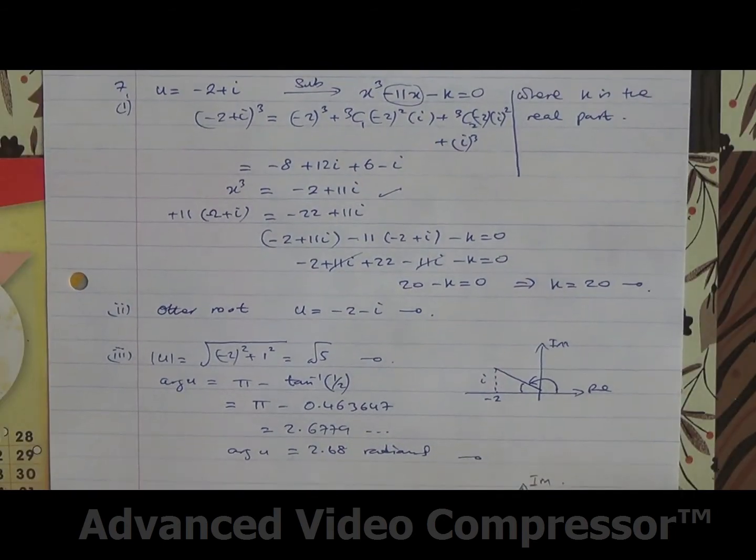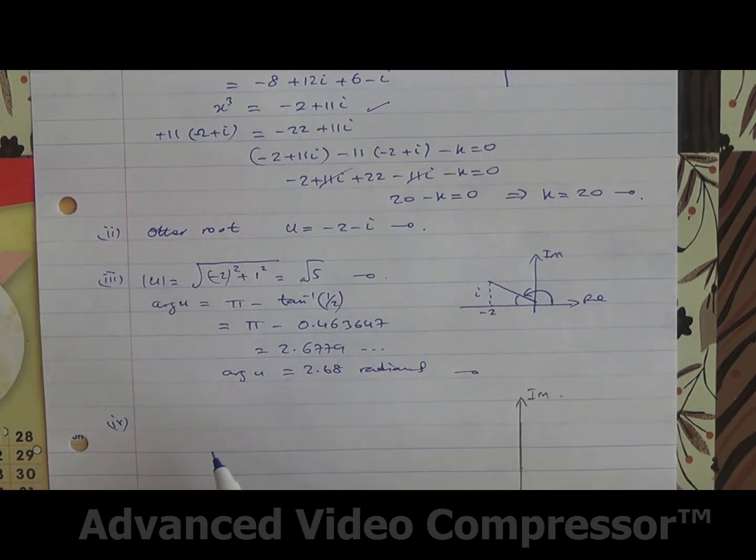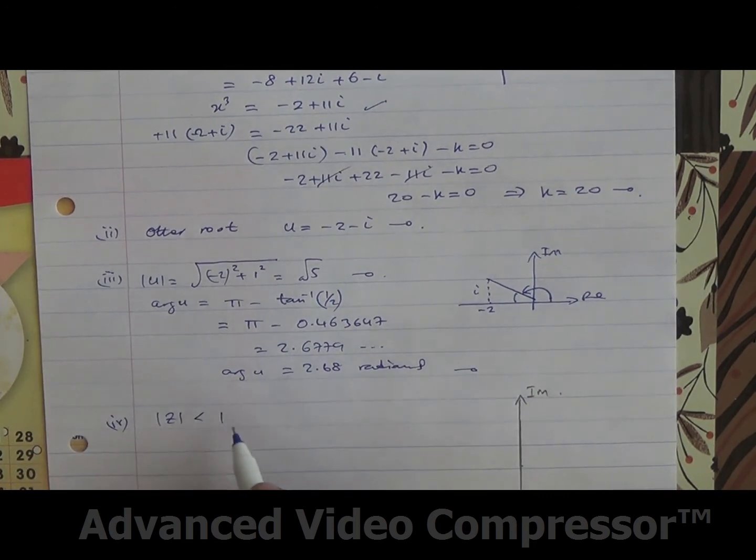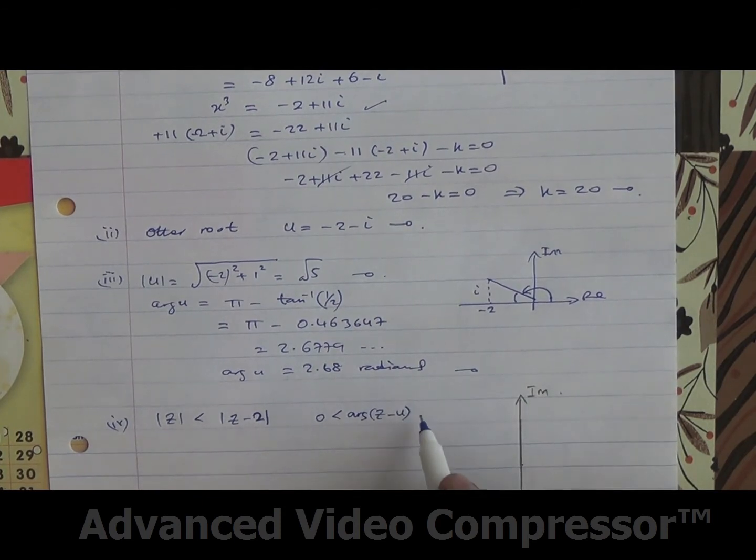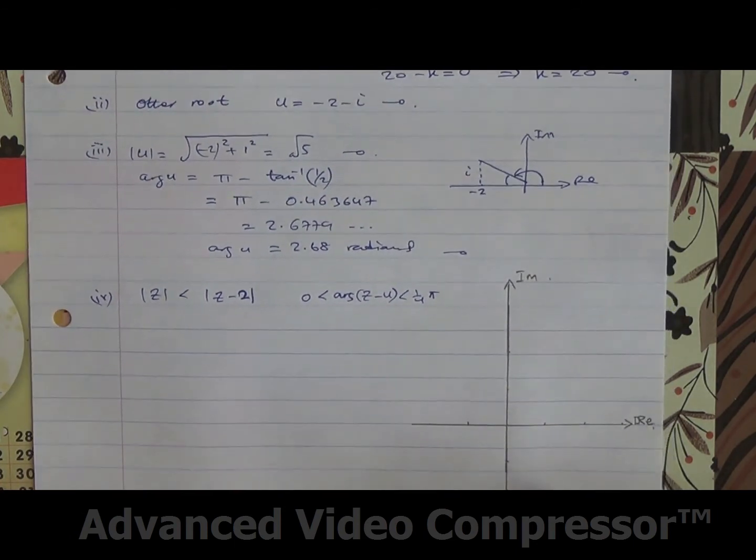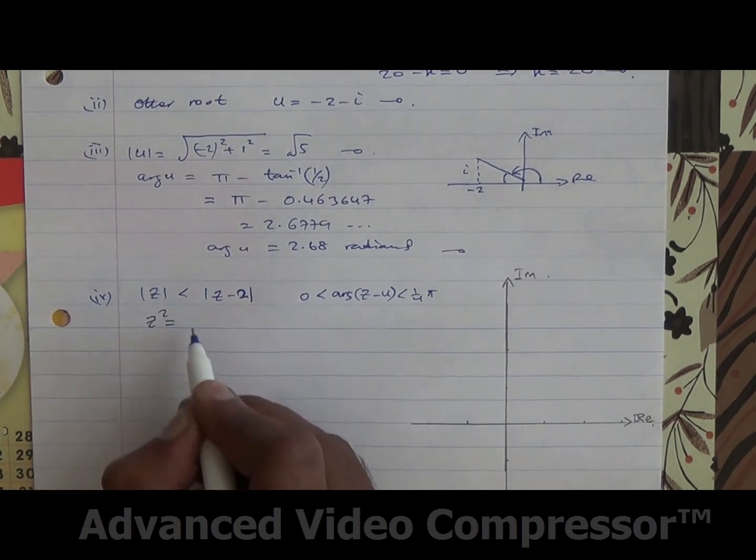As for the fourth part of the question, you need to sketch in an Argand diagram, the mod of z being less than mod of z minus 2, and also 0 being less than the argument of z minus u less than a quarter pi. All right, so to be able to do this, let's take a look. Now, what is this one? We can square both sides.